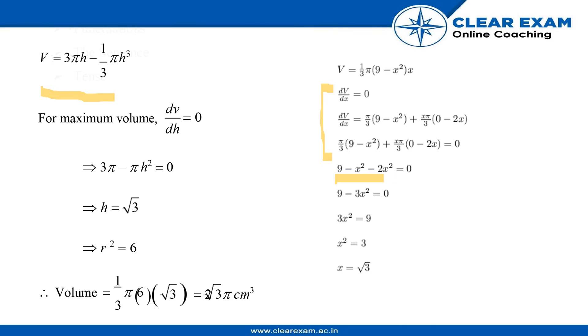will obtain this equation. Now after simplifying, we will get 9 - 3x² = 0, so 3x² = 9, x² = 3, and x = √3, where x is equal to the height.